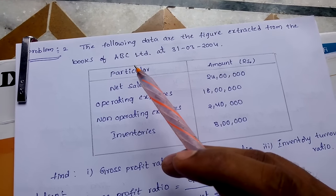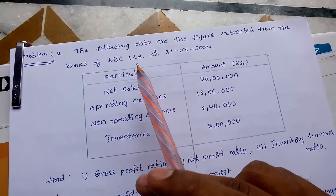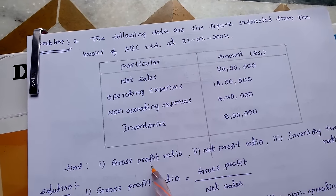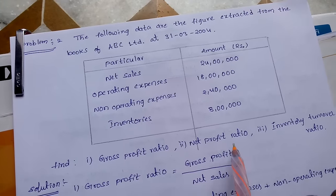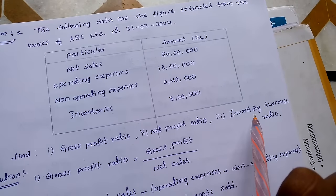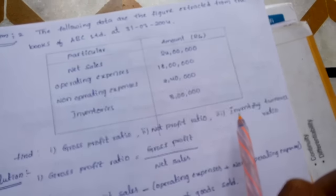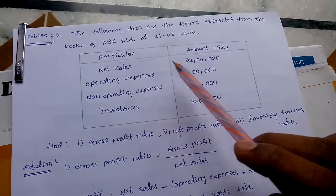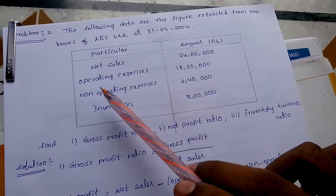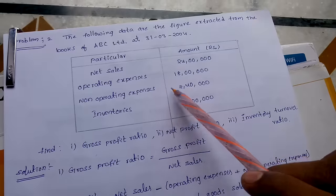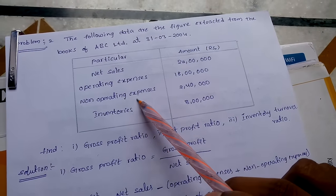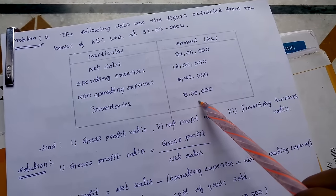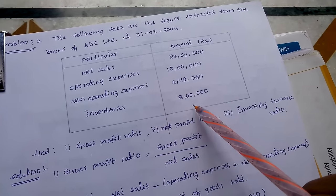Now we will go for the second problem. The data given in this problem: we need to find out gross profit ratio, net profit ratio, and inventory turnover ratio. The data is: net sales is 24 lakhs, operating expenses are 18 lakhs, non-operating expenses are 2 lakh 40,000, and inventories are 8 lakhs.